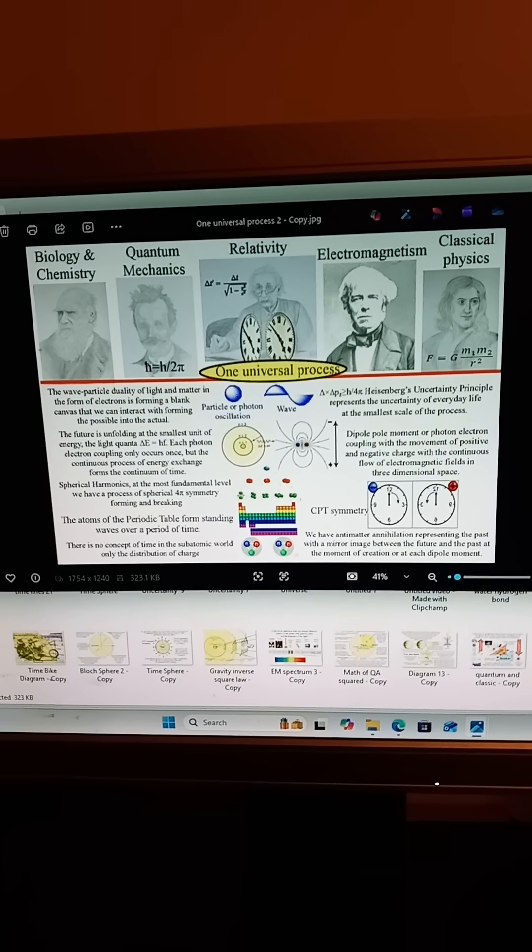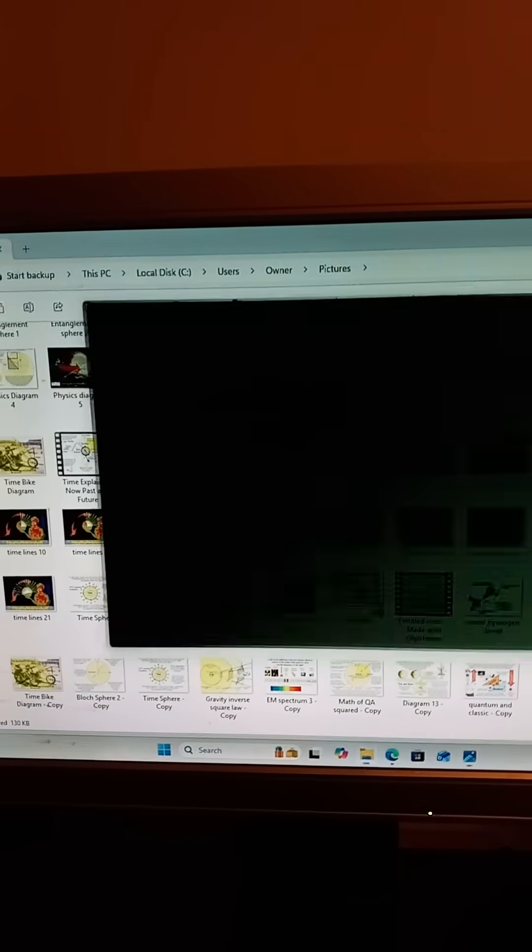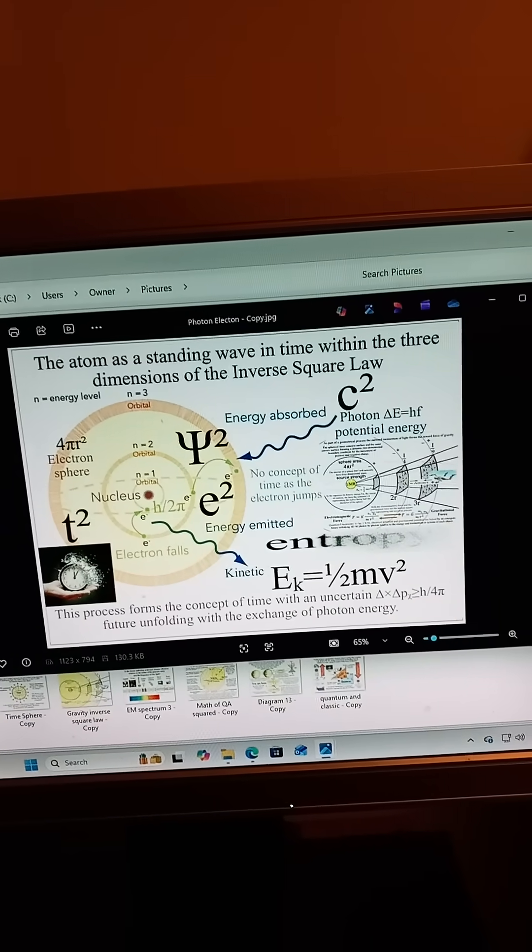In quantum atom theory, time does not exist first. Time appears when a photon interacts with an electron. Every absorption or emission of light is an event.